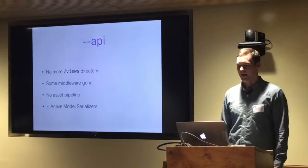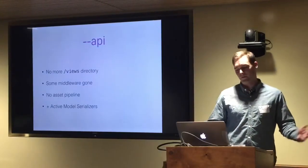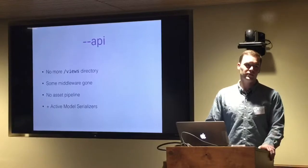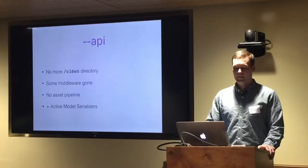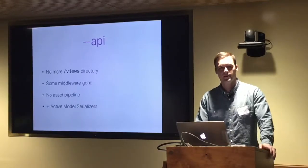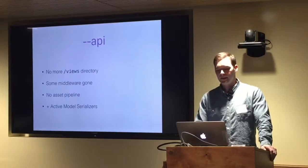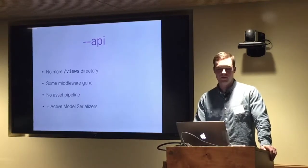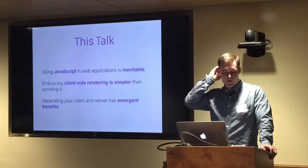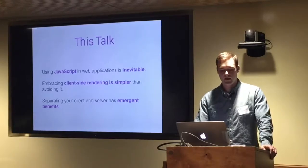So what is dash dash API? Technically, it removes your views directory — one less directory. Some middleware is gone. No asset pipeline. And you get Active Model Serializers by default to serialize models into JSON. That's not the most interesting part to me — I assume there's some negligible performance gain — but really I want to talk about the idea of using dash dash API for your next Rails application.